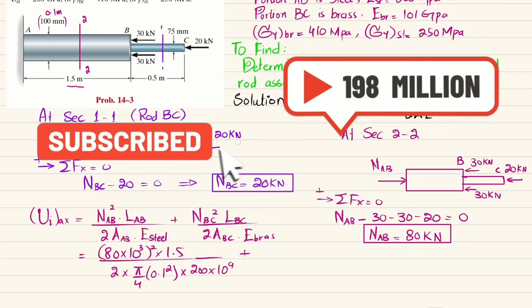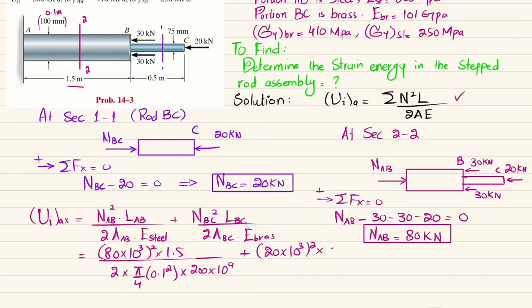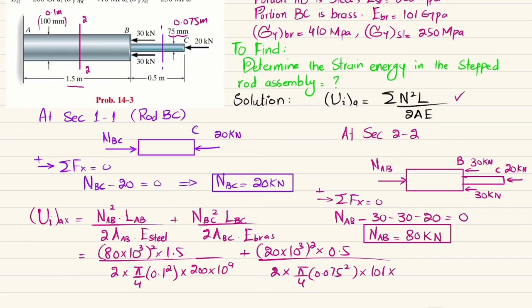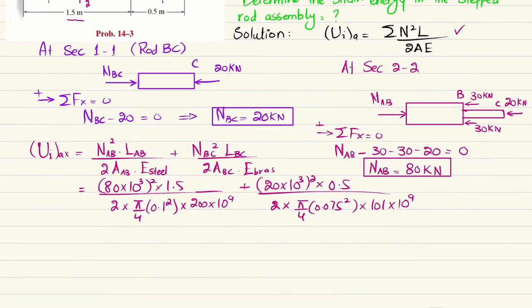For rod BC: N_BC squared times L_BC divided by 2 times A_BC times E_brass. Substituting: (20 × 10³)² × 0.5, divided by 2 times (π/4 × 0.075²) times (101 × 10⁹). Rod BC is made of brass with E equals 101 GPa and diameter 75 mm, i.e., 0.075 m. Calculating both terms gives a total strain energy due to axial loading of 3.28 joules.